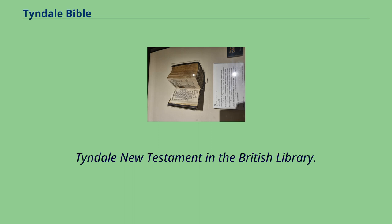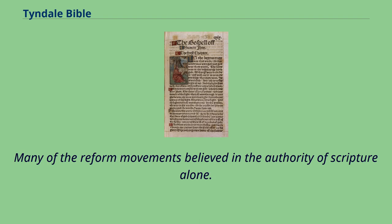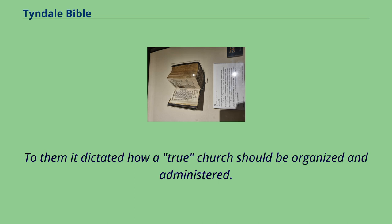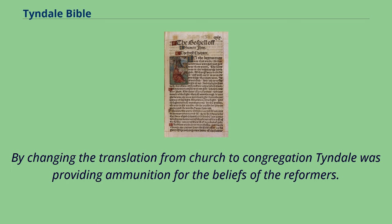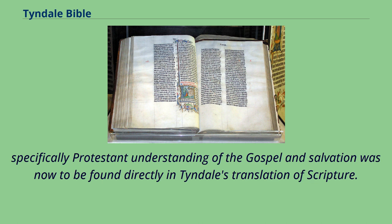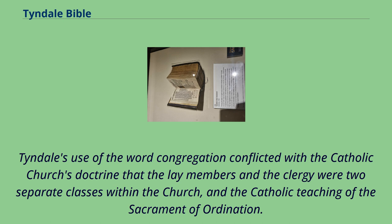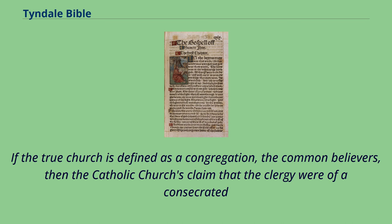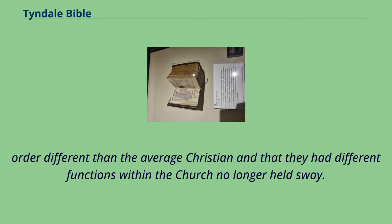Many of the reform movements believed in the authority of Scripture alone, which dictated how a true church should be organized and administered. By changing the translation from church to congregation, Tyndale was providing ammunition for the beliefs of the reformers — that the church was not a visible, systematized institution but a body defined by believers, however organized, who held a specifically Protestant understanding of the gospel and salvation. Tyndale's use of the word congregation also conflicted with the Catholic Church's doctrine that lay members and clergy were two separate classes within the Church, and with the Catholic teaching of the sacrament of ordination. If the true church is defined as a congregation of common believers, then the Catholic Church's claim that the clergy were of a consecrated order different from the average Christian no longer held sway.